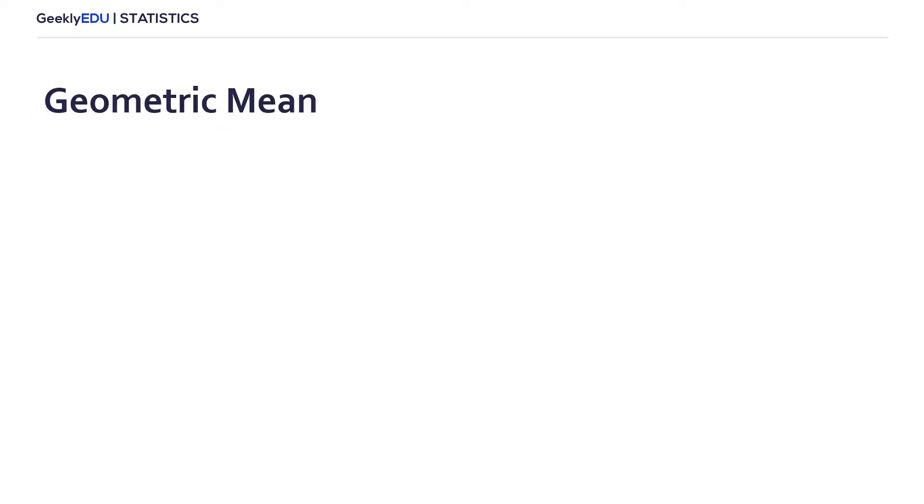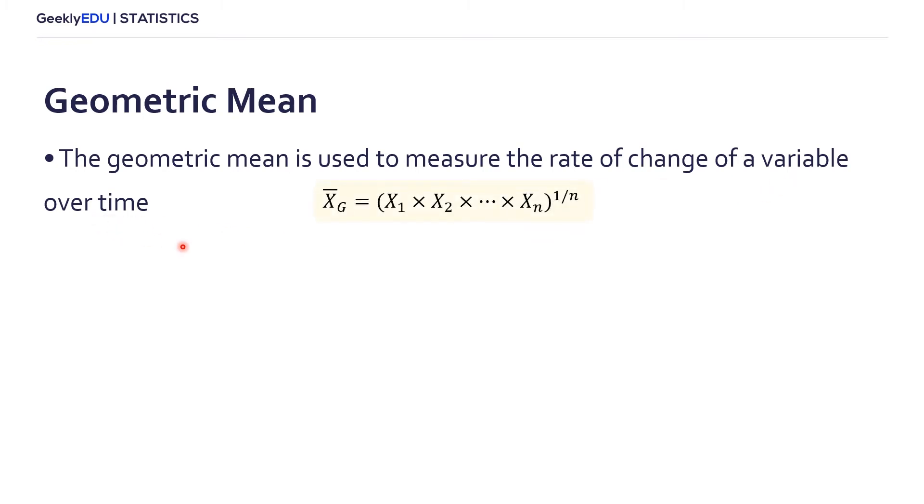And our second and final topic today is the geometric mean. The geometric mean is used to measure the rate of change of a variable over time. The formula looks like this. X bar sub g, g standing for geometric, as we saw in the previous slide,